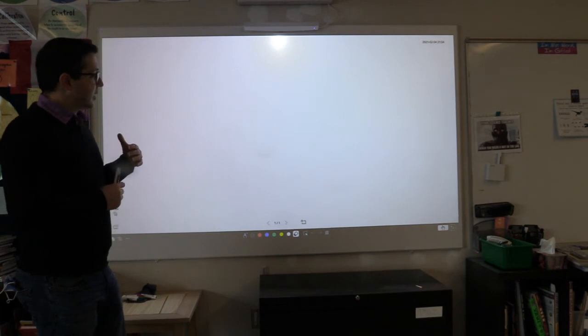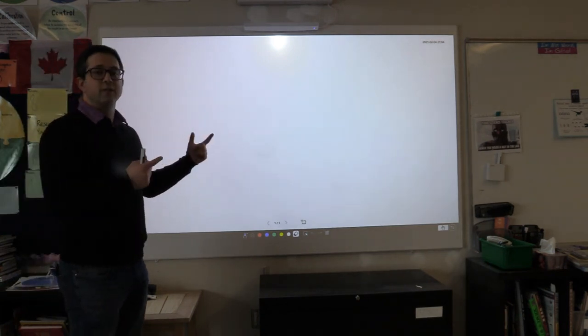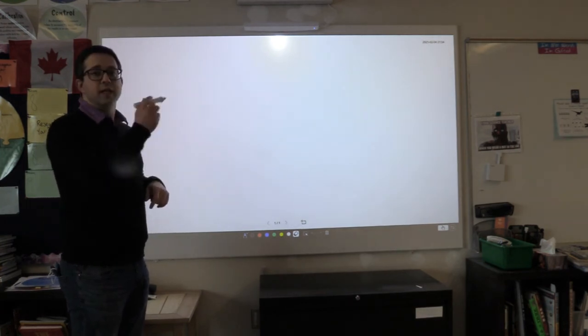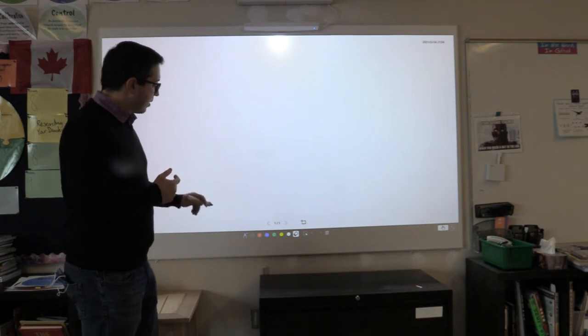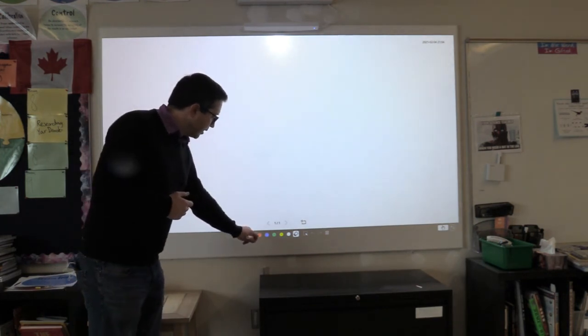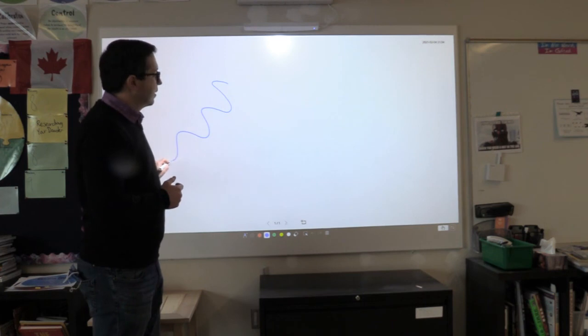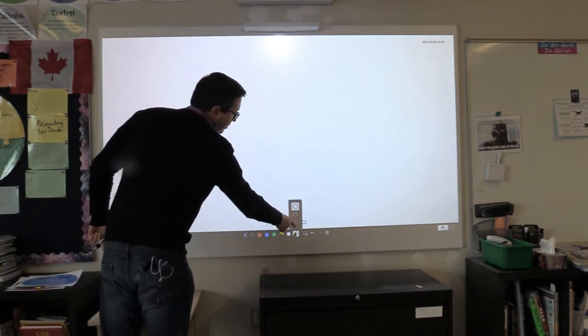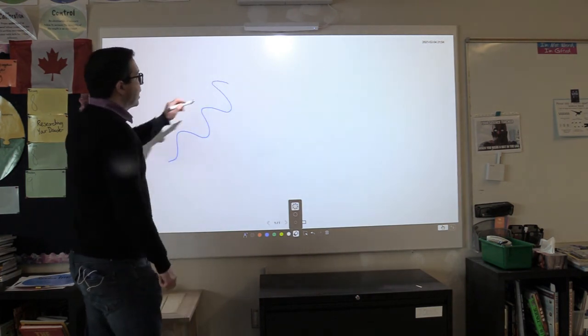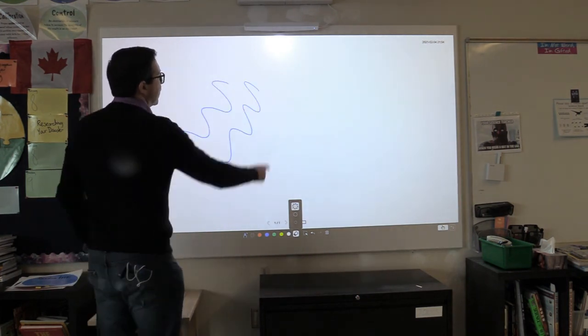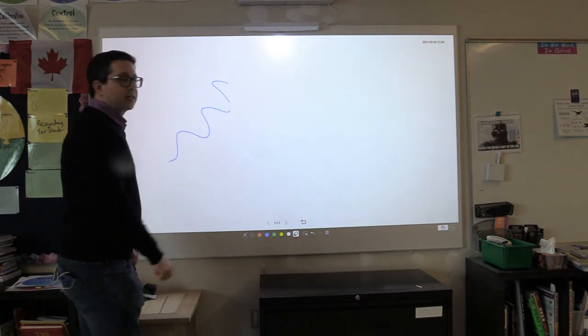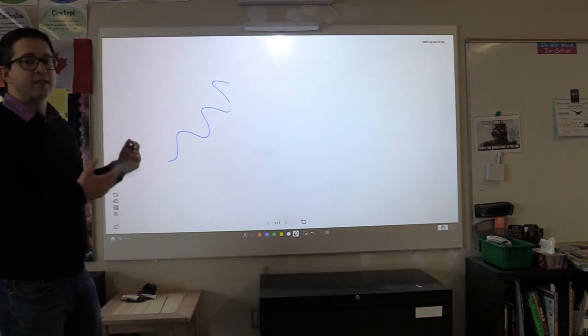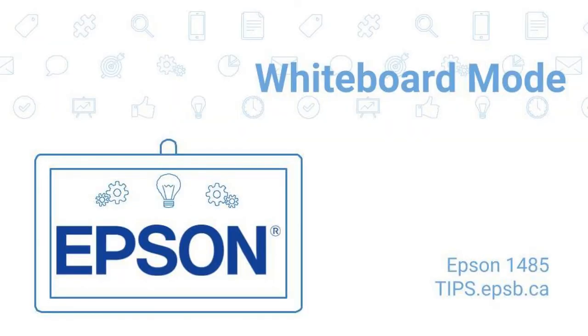So for example, I might set my pen to be the blue ink and I might set my finger to be the eraser. And I can choose the width of the eraser that I'd like. Now as I write, I can come along with my finger and erase quite quickly and easily. That allows me to interact seamlessly with the board.